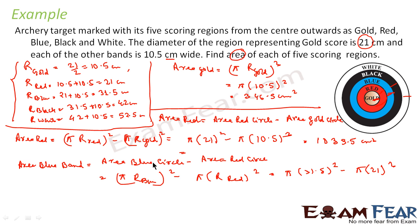Very simple, same approach, just keep on putting the values, solve it and get the answer. Just understand the concept. The concept here is, the moment you want to find the area of red band, you have to find the area of red circle minus area of gold circle. Similarly, for the black band, area of black circle minus area of blue circle. Correct.